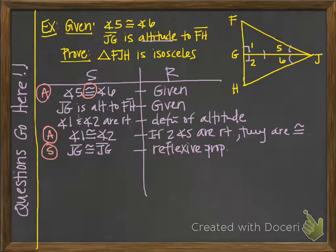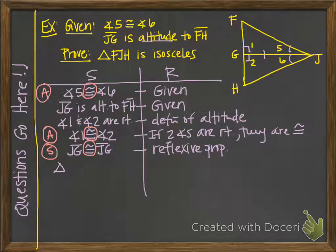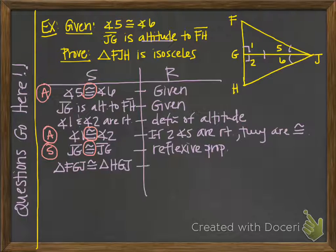By ASA, we can state that the two triangles are congruent. Naming the top triangle first, we call it triangle FGJ. Make sure the letters correspond correctly in the second triangle: F corresponds with H, G corresponds to itself, and J corresponds to itself — these triangles are reflections of each other. So triangle FGJ is congruent to triangle HGJ by ASA.